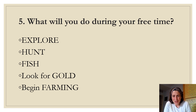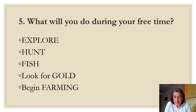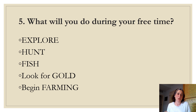Decision five: what are you going to do during your free time? Even colonists who work really hard have a little bit of free time, and you get to choose two things to spend your free time on. Your options are: explore, hunt, fish, look for gold, or begin farming. Next to number five, write two of those choices.